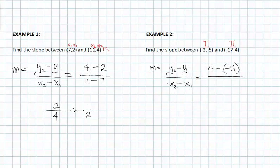Notice I subtracted a negative, I didn't subtract a positive there because y sub 1 is negative 5. And then x sub 2 is negative 17 minus x sub 1 which is negative 2.